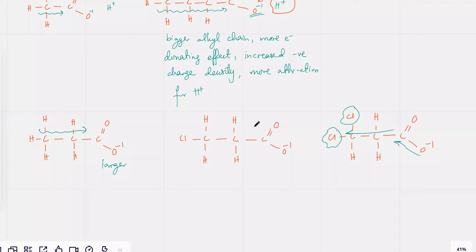This one would be in the middle somewhere. So over here you have more electron withdrawing effect, and you're going to have more electron withdrawing effect, and because of that there's going to be lesser negative charge density.